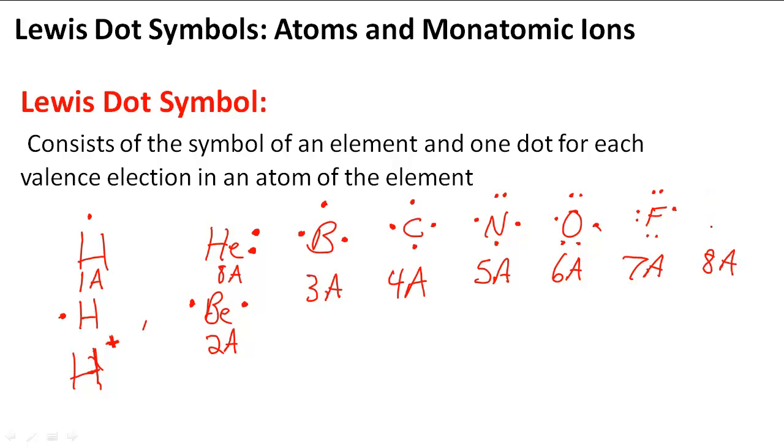And finally, 8A, which is like neon, and it has 8 valence electrons. So it's very happy and probably not going to form ions.